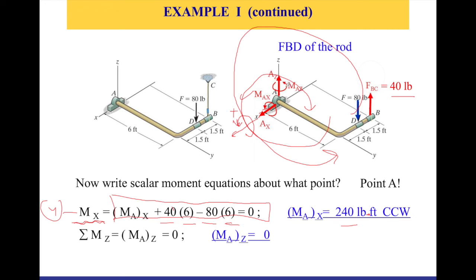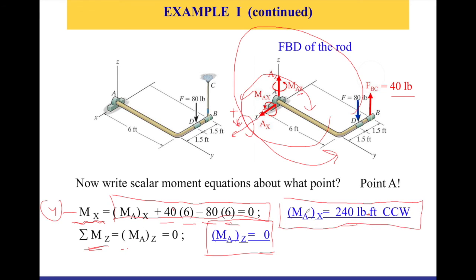For the last equation — the moment about the z-axis — we check each force: Az passes through the z-axis, no moment; Ax passes through the z-axis, no moment; FBC and the 80-pound force are parallel to the z-axis, so they create no moment either. Therefore, ΣMz = 0 gives Maz = 0. This concludes our analysis — all unknowns Ax, Az, Max, Maz, and FBC have been found.